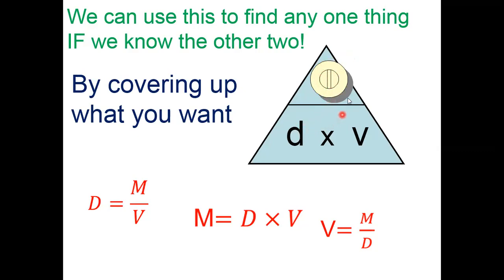For example, in this case here we have covered the mass, so we remain with density times volume. That means mass is given by density multiplied by volume. If we want something else, you also cover it. For example, if I want volume, I'm going to cover volume. So if this is covered, then it will be mass divided by density. That's why volume is mass divided by density. Whatever you cover gives you its formula.